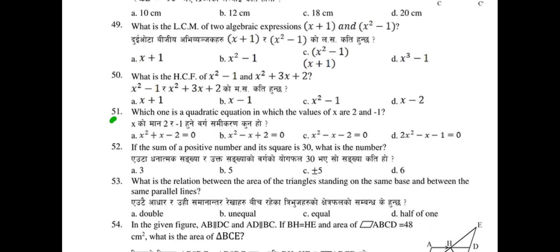Question 51: Which one is a quadratic equation in which the values of x are 2 and −1? Select from ABCD. Question 52: If the sum of a positive number and its square is 30, what is the number?